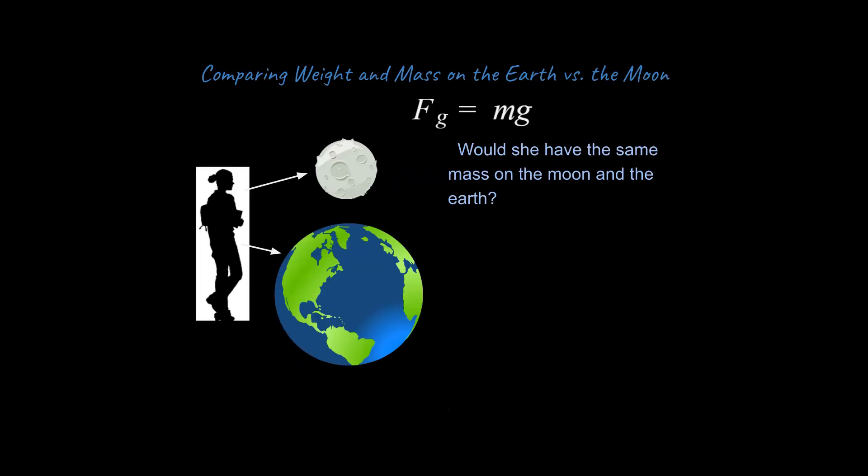One last thing I need to talk about addresses this idea if you really know the difference between weight and mass. The question is, would this student have the same mass on the moon as on the earth? And the answer is yeah, she would have the same mass, the same amount of stuff that makes up her body. Or if you want to be more technical, she would still have the same amount of resistance to acceleration, or the same amount of inertia. Yes, she would still have the same amount of mass.